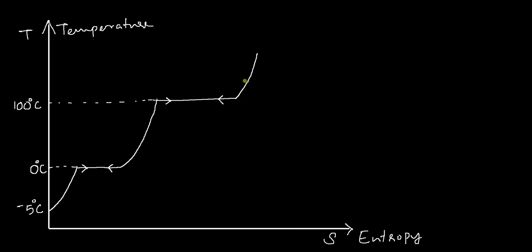If you increase heat further, nothing will happen other than the steam becoming superheated steam. The steam can exist in the same gaseous condition at higher temperatures — you can have it at 150 or 300°C or whatever temperature you want. That steam is called superheated steam.